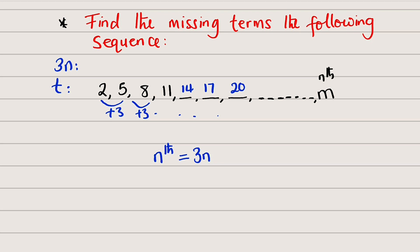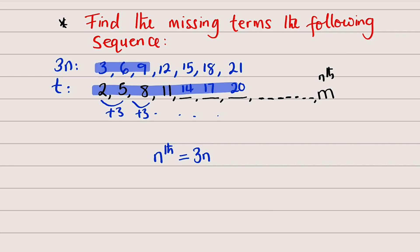We find the 3 times table by substituting values of n. When n equals 1: 3×1 = 3; n equals 2: 3×2 = 6; 3×3 = 9; 3×4 = 12; 3×5 = 15; 3×6 = 18; 3×7 = 21. Now observe: all our terms are 1 less than our 3 times table — because 2 is 1 less than 3, and 17 is 1 less than 18. Therefore we subtract 1, giving the formula 3n − 1.